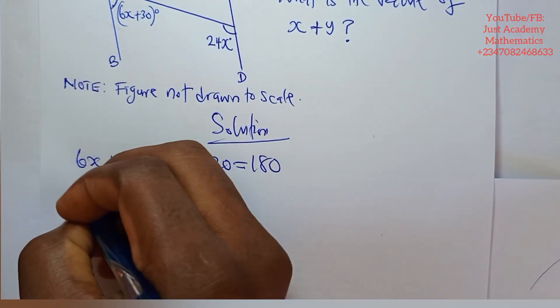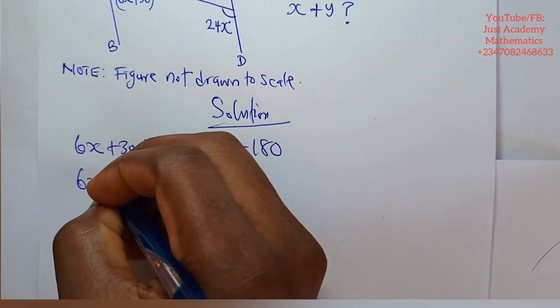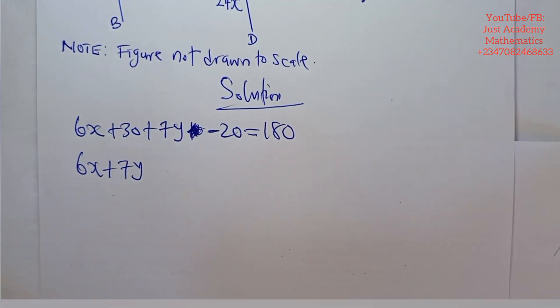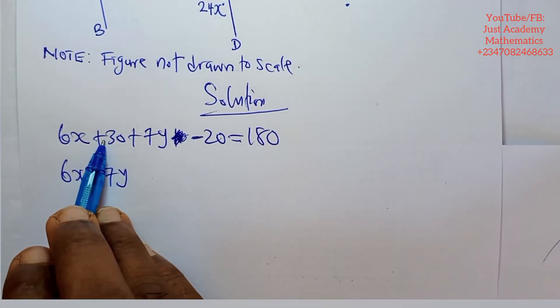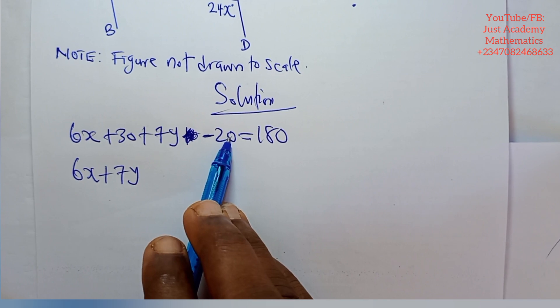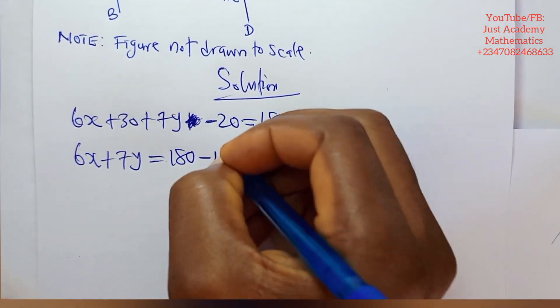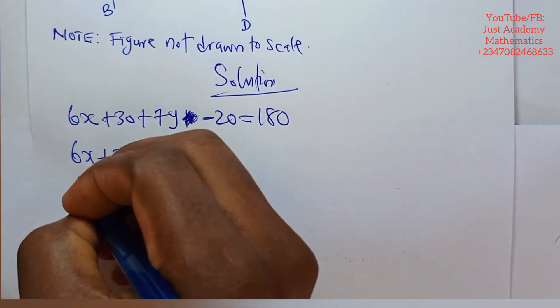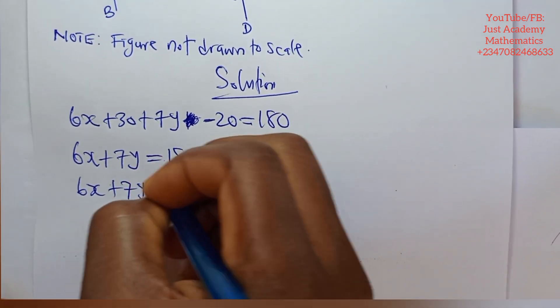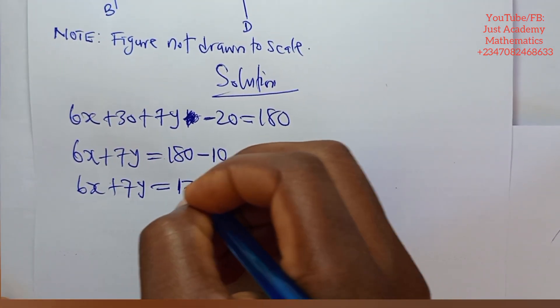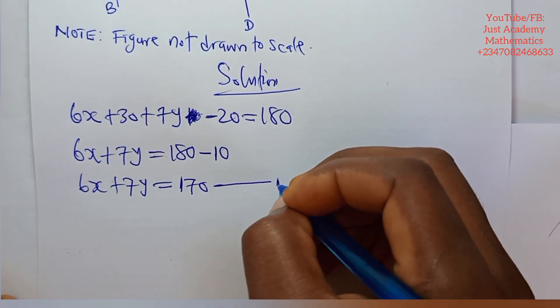Now let's proceed. So this is 6x plus 7y plus 30 minus 20 is 10. 10 come to this side will give me 180 minus 10. So we have 6x plus 7y is equals to 170. Call this equation 1.